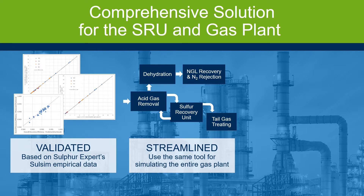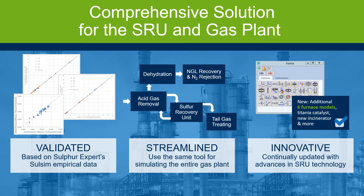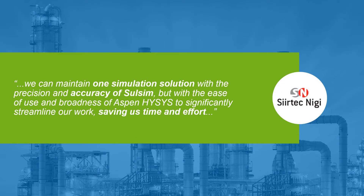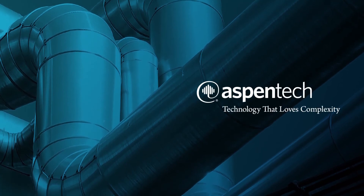This enables engineers to look at the full gas plant when evaluating feed options. While SALSIM sulfur recovery in ASPEN HYSIS V9 and above includes all of the technology available with SALSIM 7, many additional innovations have been introduced. SALSIM sulfur recovery is used by over 80 companies worldwide. SirTechnigi says they can maintain one simulation solution with the precision and accuracy of SALSIM, but with the ease of use and broadness of ASPEN HYSIS, significantly streamlining their work and saving time and effort. Imagine the value of this application for your organization — learn more at aspentech.com.